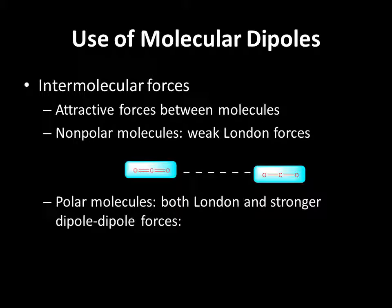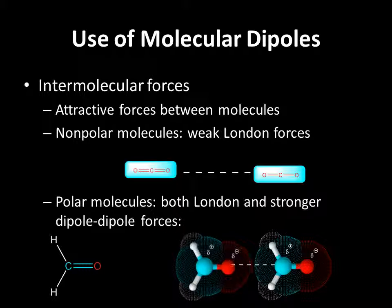With polar molecules, you have both London and the stronger dipole-dipole forces. Everybody gets London forces — if you have electron pairs, you have London forces — but you only get dipole-dipole forces if your molecule has a net dipole. Looking at formaldehyde, we see these two molecules can interact because there is a net dipole. The attraction is between the partially negative oxygen and the partially positive carbon, and they'll actually tend to align the O and C weakly because of the dipole-dipole interaction, which is about ten times stronger than a London force.